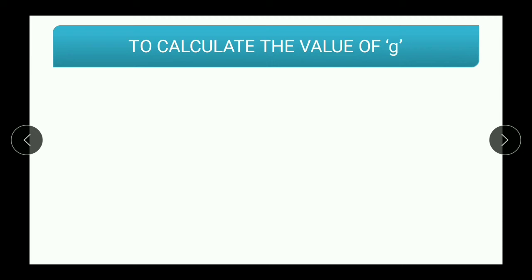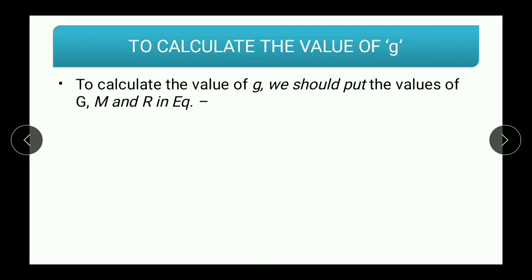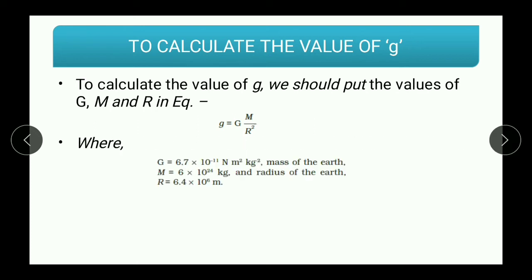The next topic is calculating the value of g. How do we calculate small g, the acceleration due to gravity? We all know that on earth, acceleration due to gravity is 9.8 meters per second squared, but how do we arrive at this value? To calculate g, we put the values of capital G, capital M, and capital R into the equation: small g equals capital G times capital M divided by R squared. The values are: G equals 6.7 times 10 to the minus 11 Newton meter squared per kilogram squared, mass of earth equals 6 times 10 to the 24 kg, and radius of earth equals 6.4 times 10 to the 6 meters.